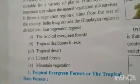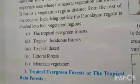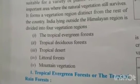Now, natural vegetation of India. In India, there are five types of natural vegetation: number one is tropical evergreen forest, tropical deciduous forest, tropical desert and littoral forest — that is mangrove forest — and mountain vegetation.